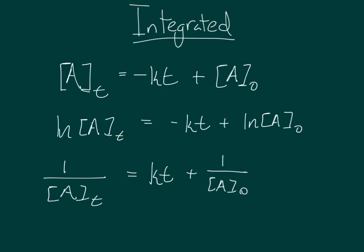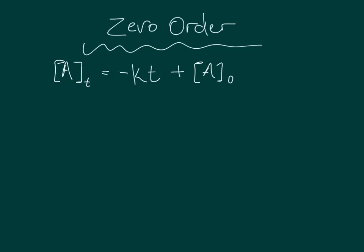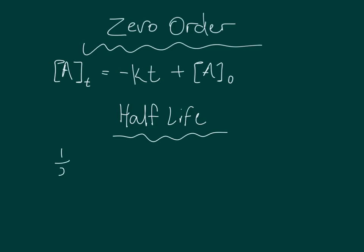The integrated rate law is a little more complicated. Instead of relating rate to concentration, the integrated rate law relates time to concentration. There are three different integrated rate laws, one for each order. For zero order, the concentration of A at time t equals the negative rate constant multiplied by time t plus the initial concentration of A. The half-life of a zero order reaction can be easily derived from its rate law: set the concentration of A at time t to half the initial concentration of A, and using algebra you find that half-life equals the initial concentration divided by two times the rate constant. This means that each successive half-life should take less time than the previous one.